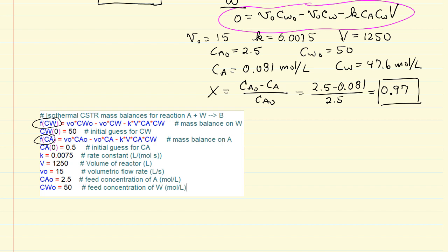You can see in this reactor that we used an excess of water so that we could convert most of this acetic anhydride.